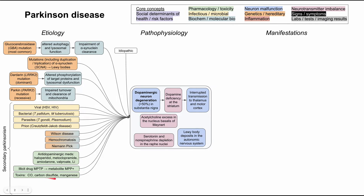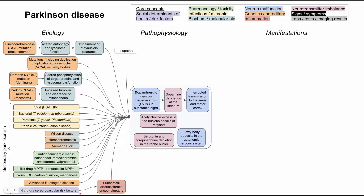Other neurodegenerative disorders — for instance, advanced Huntington's disease — can also present with Parkinson's symptoms. Vascular risk factors, including prior strokes or TIAs, can predispose to Parkinsonism as well. Cardio and cerebrovascular risk factors such as obesity, metabolic syndrome, family history, smoking, and cocaine use can all cause subcortical arteriosclerotic encephalopathy, which can predispose to this pathophysiology.